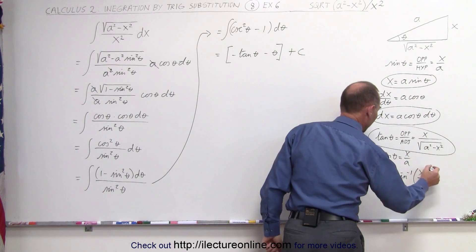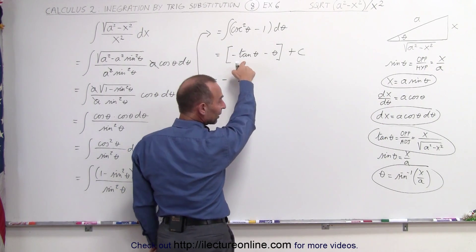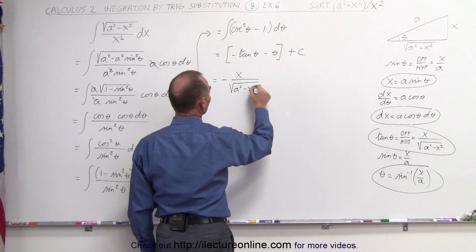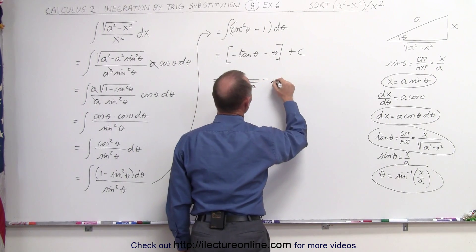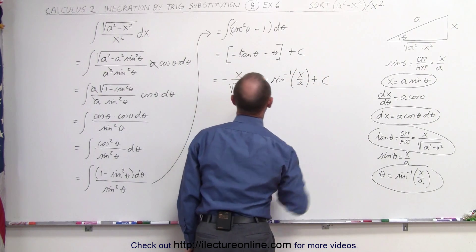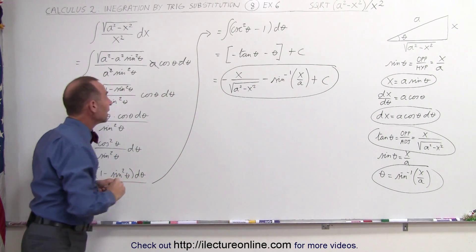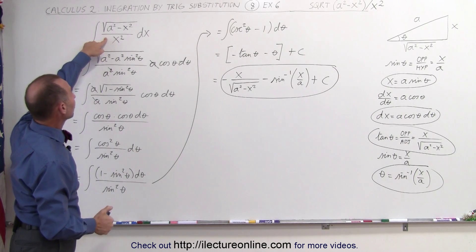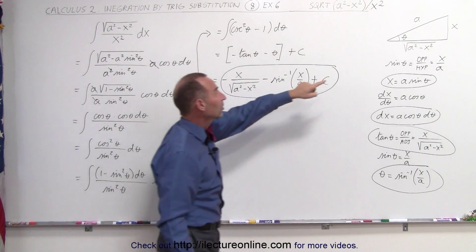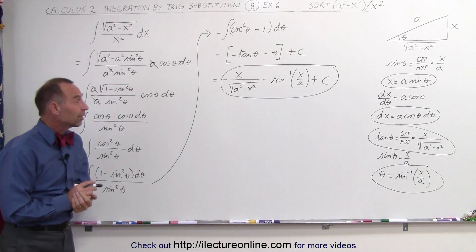Substituting these back into our equation, this is equal to minus the tangent of theta, which is x divided by the square root of a squared minus x squared, minus theta, which is the arcsine of x over a, plus a constant of integration. And that's the answer to what we're looking for: the integral of the square root of a squared minus x squared divided by x squared. Recognize that we have the square root of a squared minus x squared, which lends itself to this kind of relationship on the triangle. And that's how we solve an integral like this.